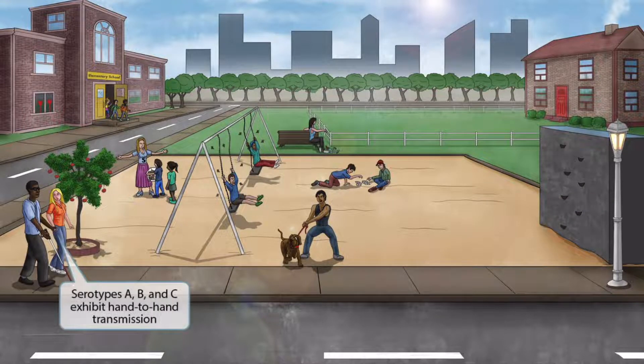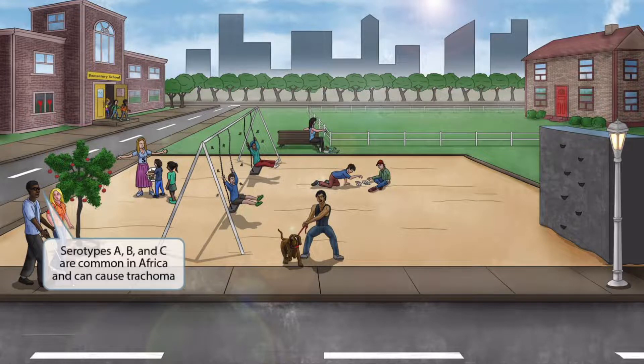For serotypes A, B, and C: a guy is holding hands with a lady next to the apple tree. Holding hands helps you remember that serotypes A, B, and C exhibit hand-to-hand transmission, unlike the other serotypes which are sexually transmitted. The guy is blind — indicated by his sunglasses and walking stick — because serotypes A, B, and C are common in Africa and can cause trachoma, which is the leading cause of blindness in the world.